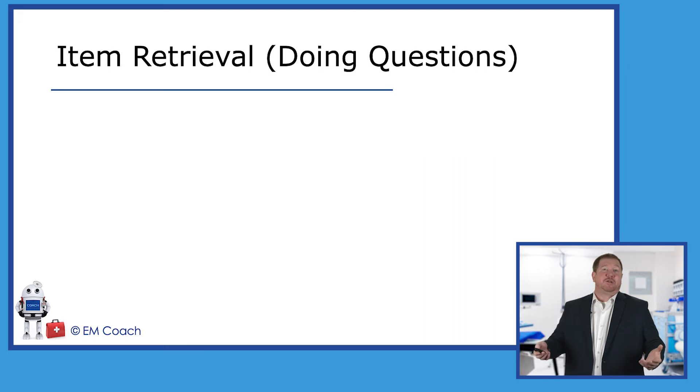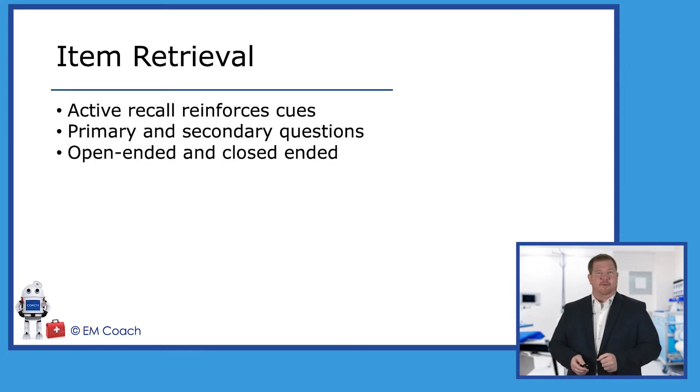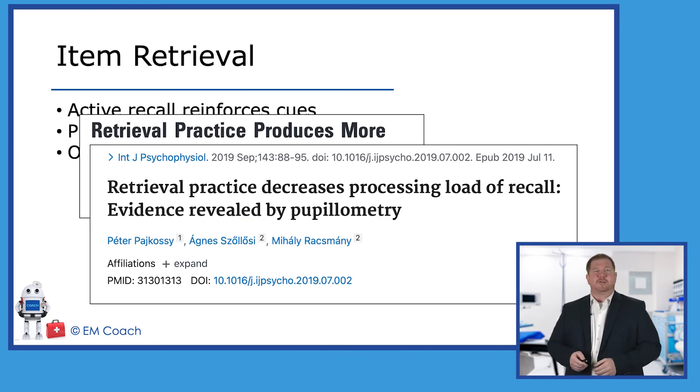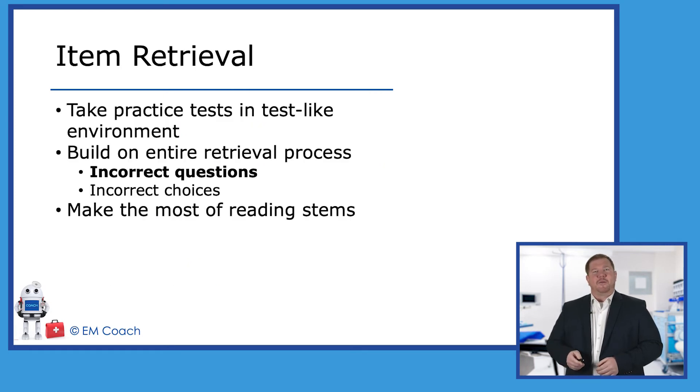So item retrieval, it's essentially doing questions. There is very good evidence for this as well. And the idea is that active recall is exactly doing what I showed you with those cues. If you're trying to get to point D over here on one side and you're starting at point A, you have to make that connection. And that's what strengthens all those cues. This has excellent evidence actually in a journal science. Very, very good study. It was, it basically is the thing everyone references that item retrieval or doing questions helps.